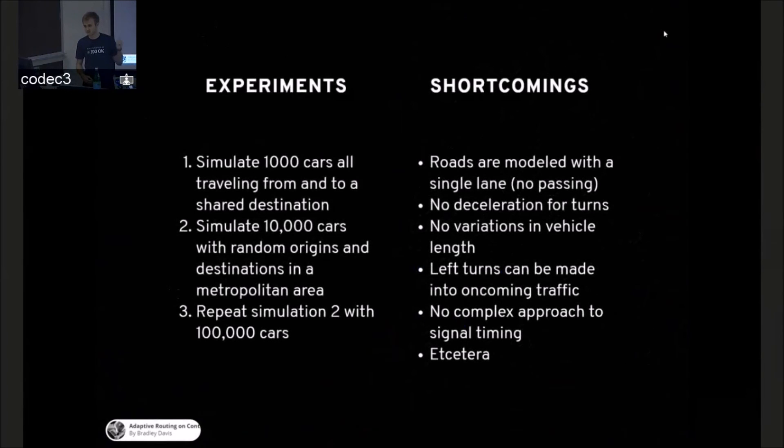So I was going to run some experiments, and I'll show you the results of those, and I just want to cover a few shortcomings. I didn't model roads with more than one lane, there's no passing available, the cars don't accelerate when they turn, there's no variation of vehicle length, they're all the same length, left turns can be made in the oncoming traffic, et cetera.